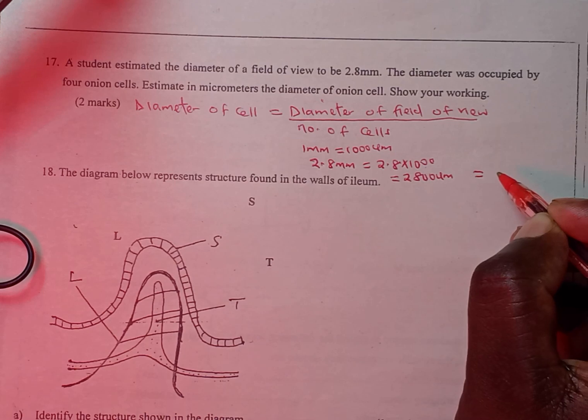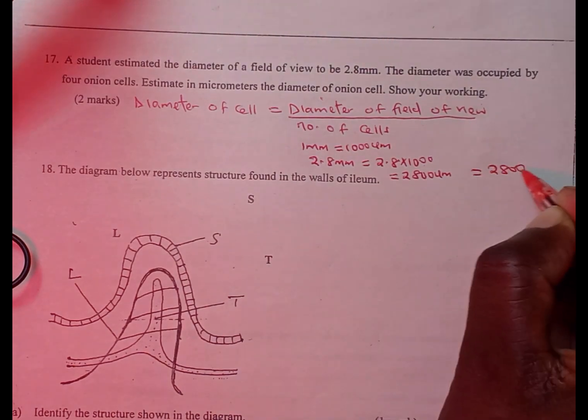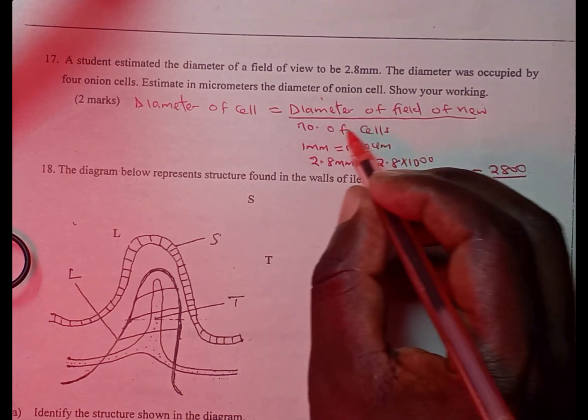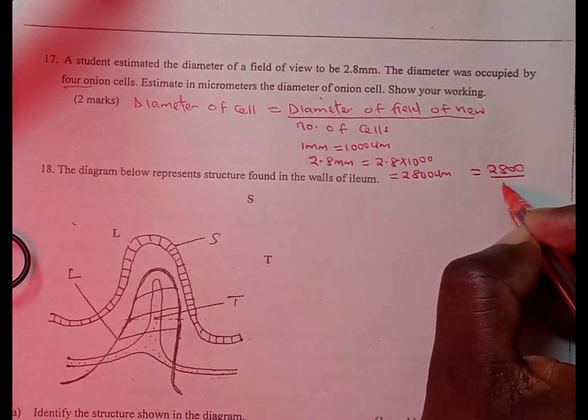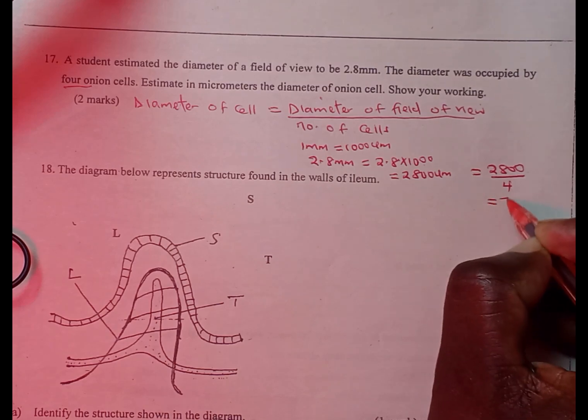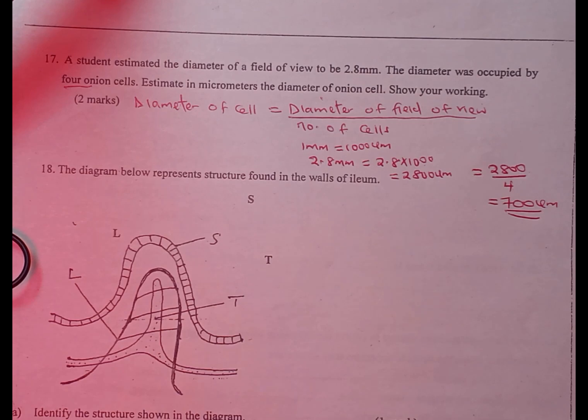this is going to be equivalent to diameter of field of view, which is 2800 micrometers, divided by the number of cells. We have been told we have four onion cells, and this gives us 700 micrometers as the diameter of one cell.